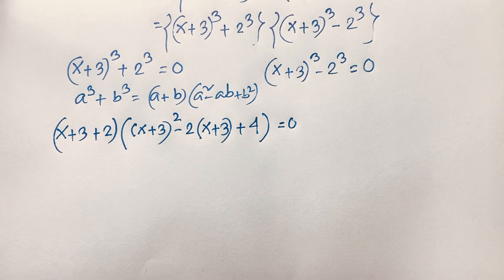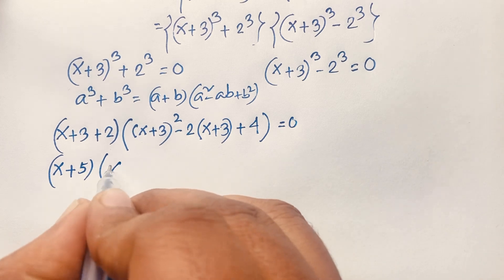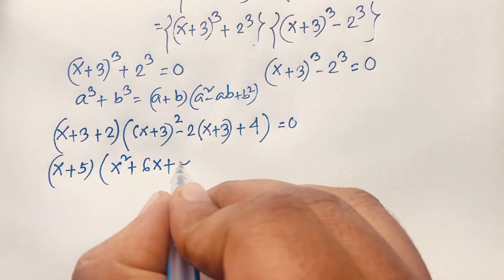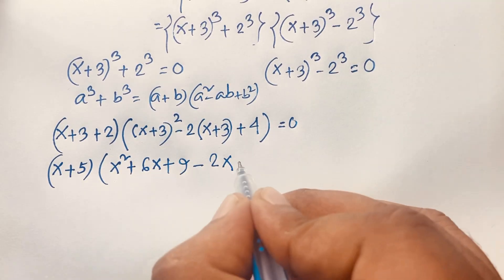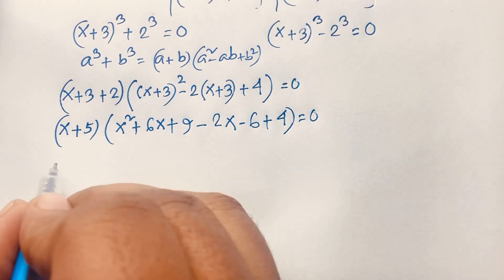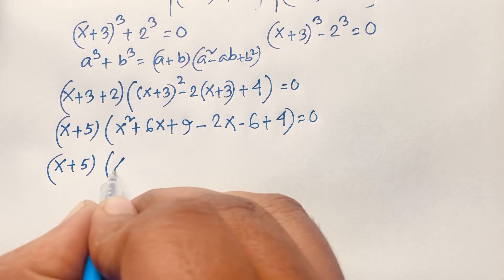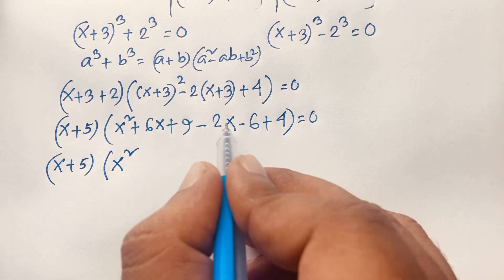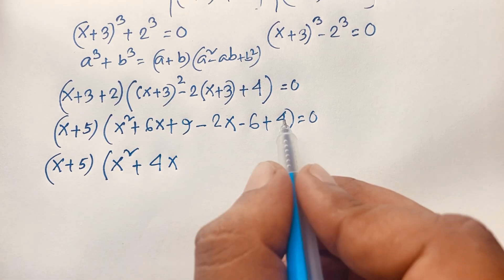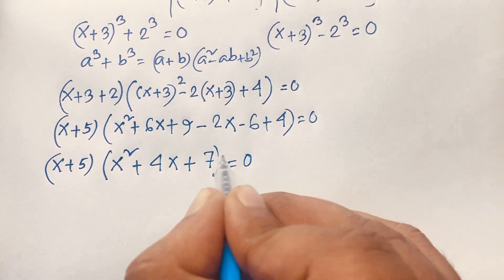At this moment I can see easily: here is (x+5), and expanding (x+3)² gives x² + 6x + 9, minus 2x minus 6, plus 4 equals 0. Then this expression is (x+5) times x² + 6x − 2x + 9 + 4, which simplifies to x² + 4x, and 9+4=13 minus 6 = 7. So I have (x+5)(x² + 4x + 7) = 0.